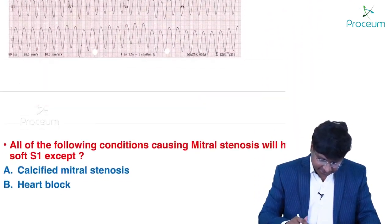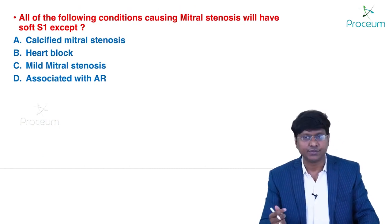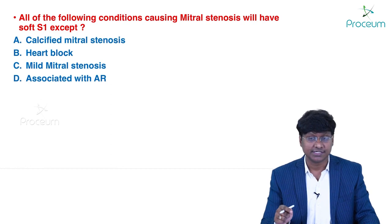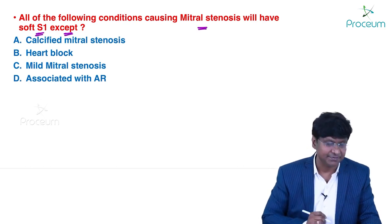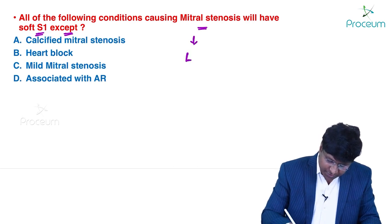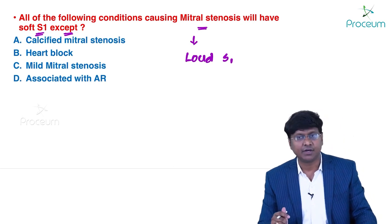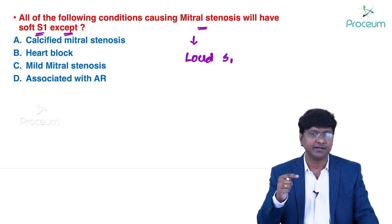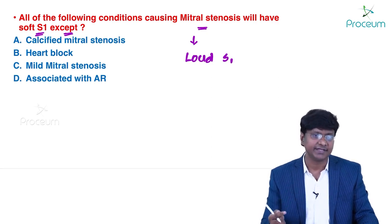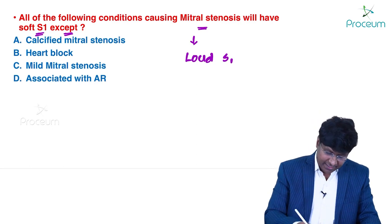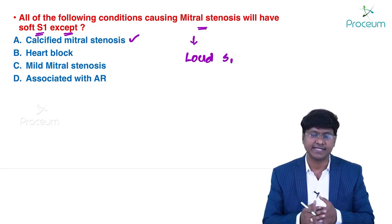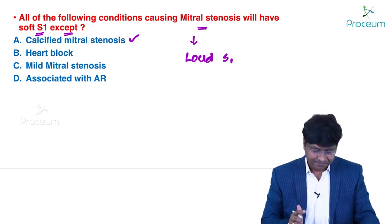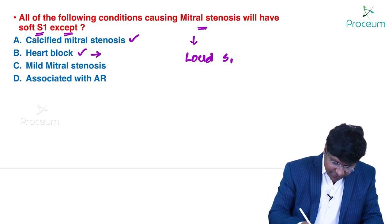Next is a valvular heart disease question: all of the following conditions in mitral stenosis will have soft S1 except. In mitral stenosis, there is normally a loud S1 due to the pressure difference between left atrium and left ventricle, causing the mitral valve to close with greater intensity. Soft S1 occurs in: calcified mitral stenosis (reduced valve mobility), and first-degree heart block (prolonged PR interval).